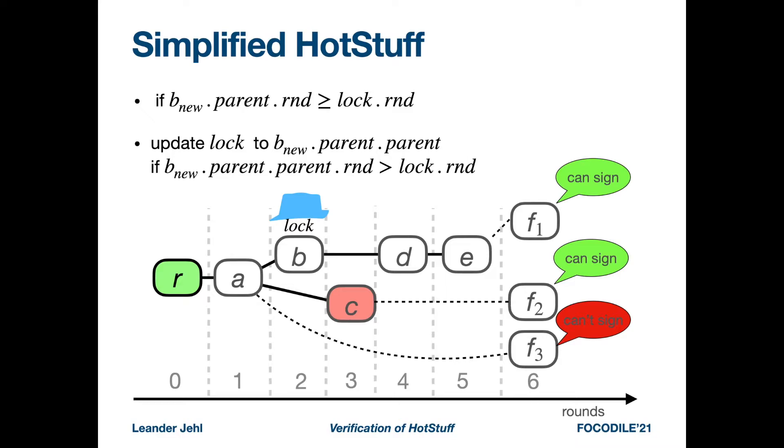After signing a new block, our process needs to update its lock to the grandparent of the new block. However, only if the new lock has a higher round than the old one. For example, assume the process signed F2 as shown in the figure. The grandparent of F2 is A and has a smaller round than B, so the lock is not updated.